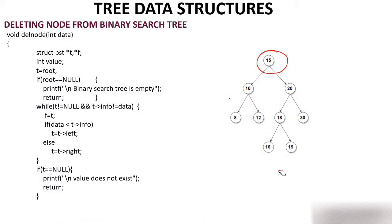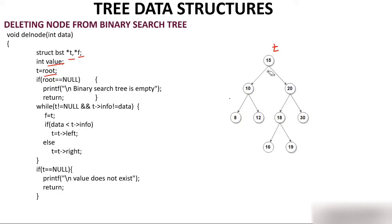In the coding part, I've created two pointers t and f, and an integer variable value. T is equal to root — t comes to the root. If root is null, I simply print 'binary search tree is empty.' Since the tree is not empty (root is pointing to 15, suppose at address 100), we proceed.